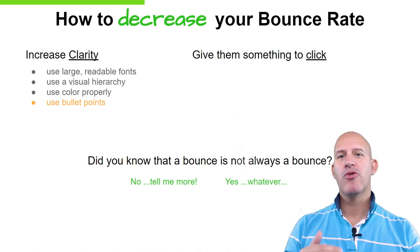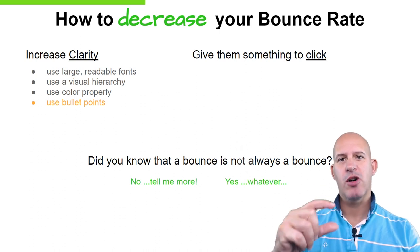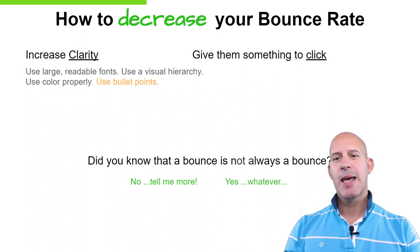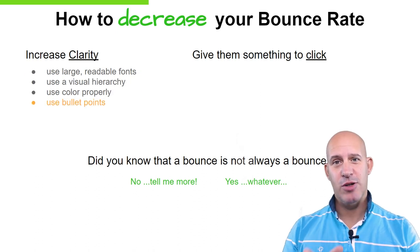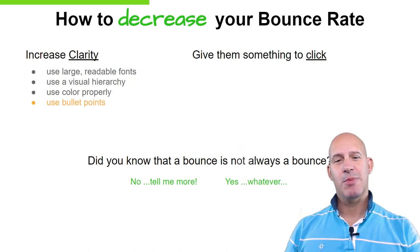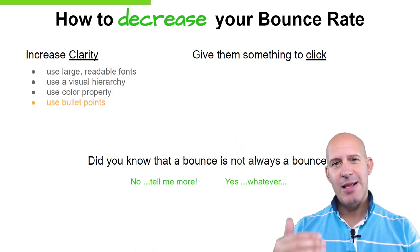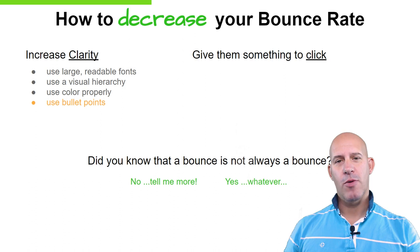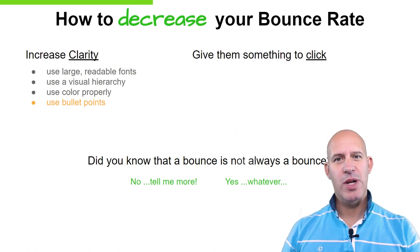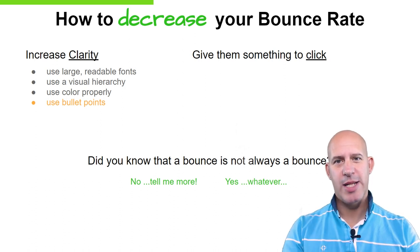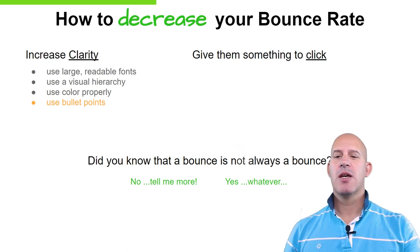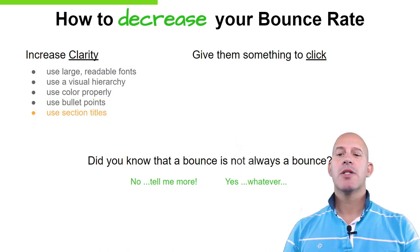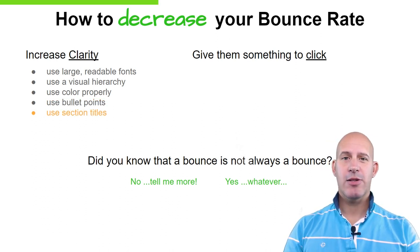Next point: use bullet points. Look at how dramatically this changes the clarity of the page. People don't have time and they don't read a chunk of text, but if you split it into bullets it's much easier and faster to read. They will understand your page better, which means they will stay longer and are more likely to take action.